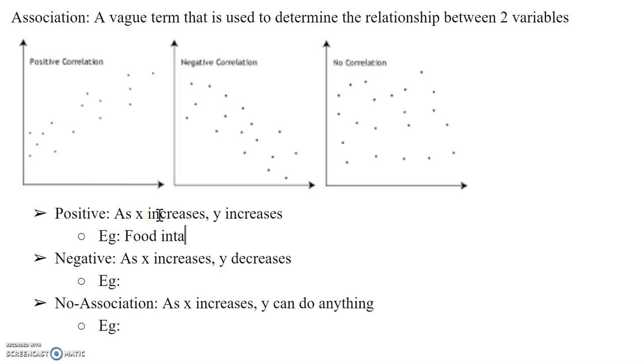For example, food intake and weight. If we increase food intake, we assume that weight will also increase. For negative, it just means as x increases, y decreases, so this would be a negative. For example, it could be speed and time to destination. If we increase the speed, the time to destination decreases. No association just means as x increases, y can do anything, which means, for example, you have weight and GPA. Having a higher weight does not mean you have a higher GPA, nor does it mean it has a lower GPA. You'd see the data points be very scattered, and there is no clear line that indicates a positive or negative association.